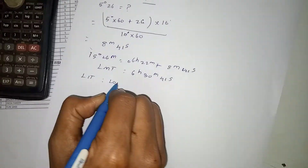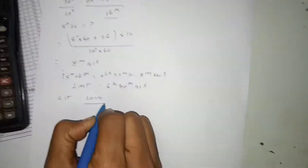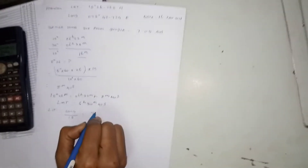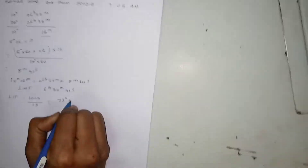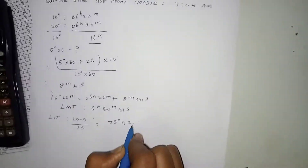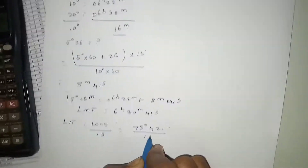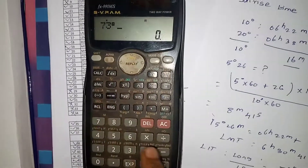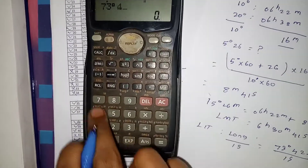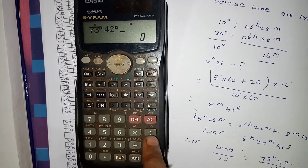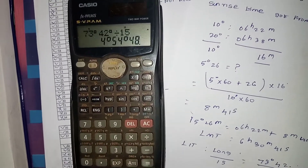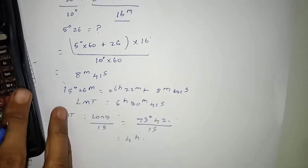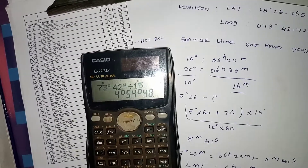Longitude in time: longitude divided by 15. Longitude is 73 degrees 42.32 minutes. Here we have 15. So 73 degrees 42 minutes divided by 15 equals 4 hours 54 minutes. This is Calcutta — 4 hours 54 minutes.